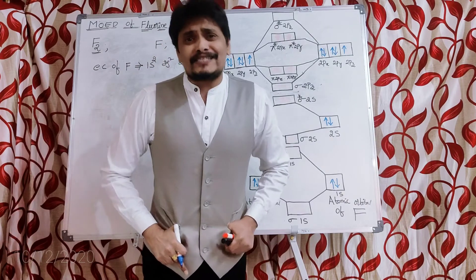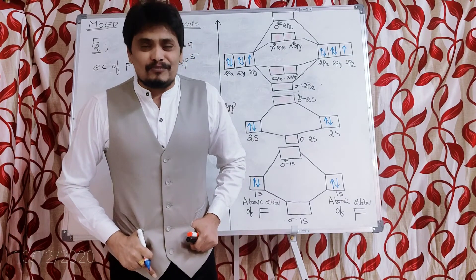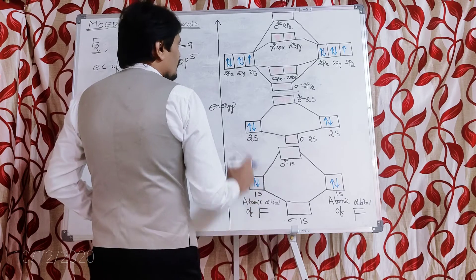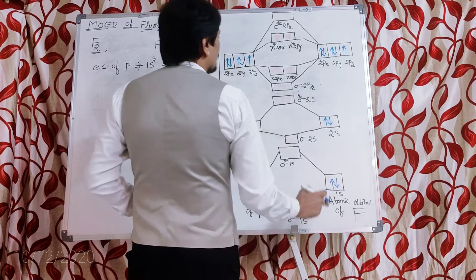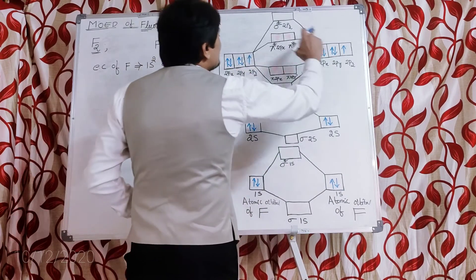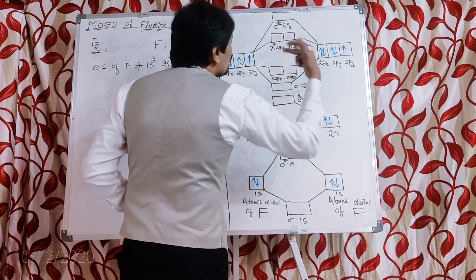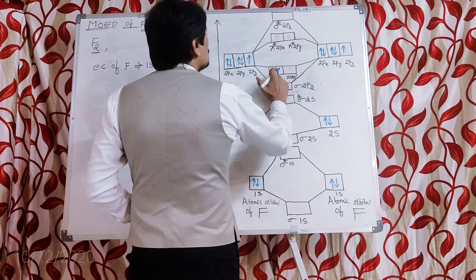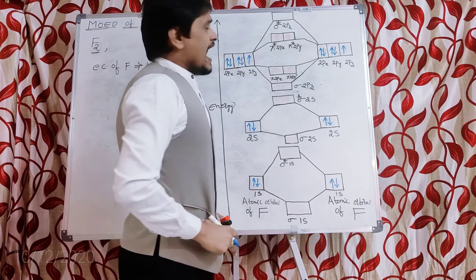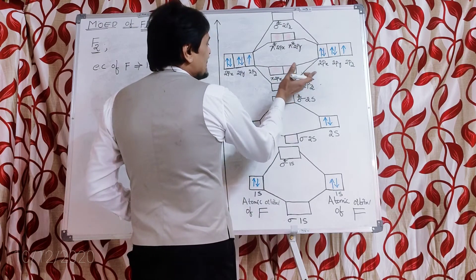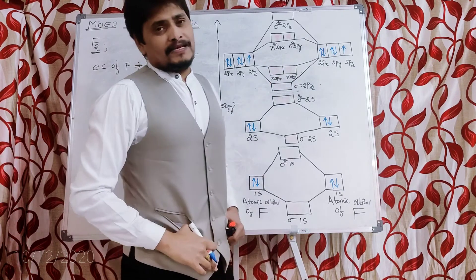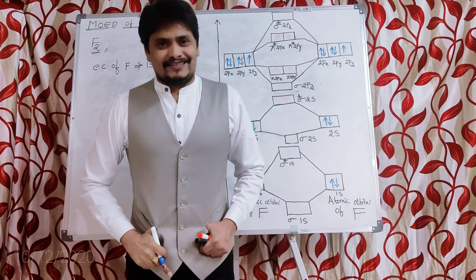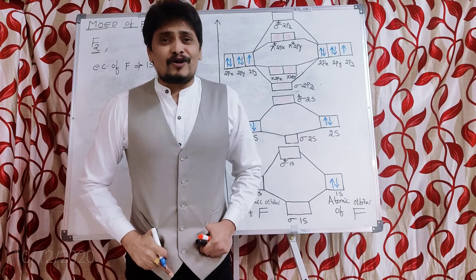The star denotes an anti-bonding molecular orbital. The six 2p atomic orbitals — three from each fluorine atom — combine to form six molecular orbitals. In the case of fluorine, σ2pz is ahead of π2px and π2py in the energy order.